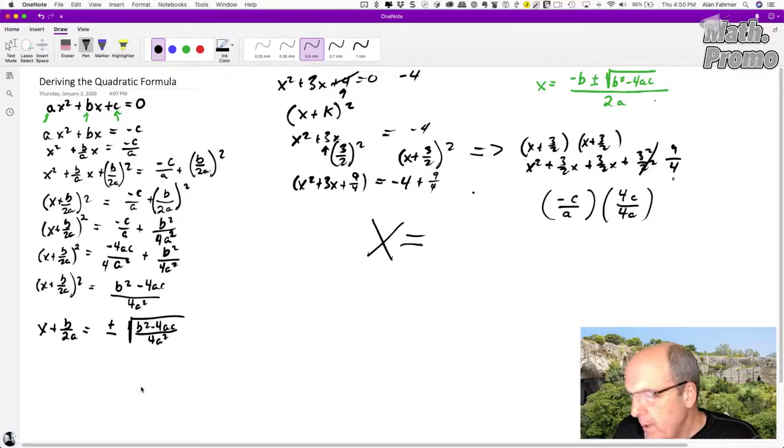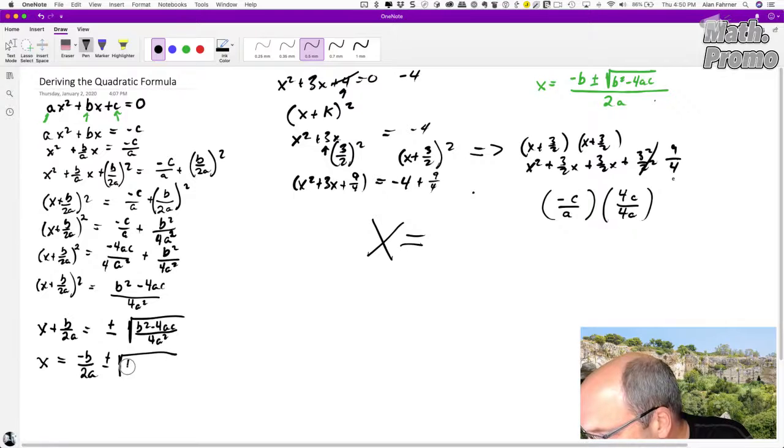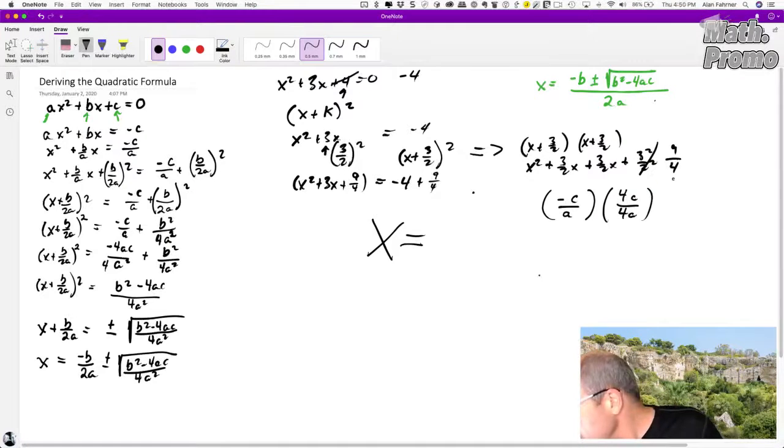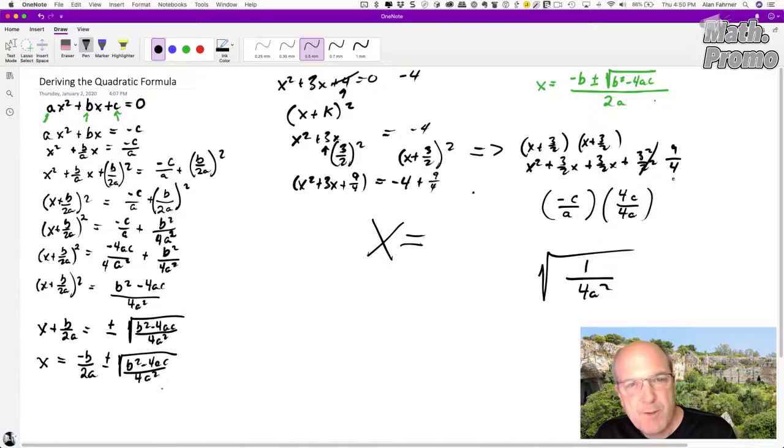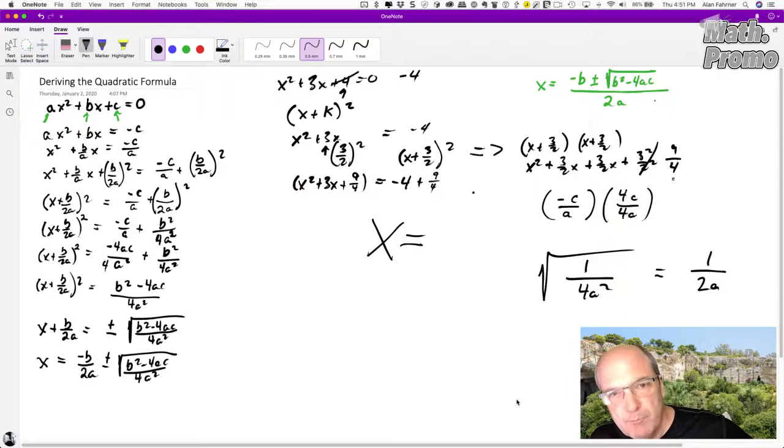We've got our X, just an X, but we have the B over 2A over there. That's not good. So let's subtract from both sides negative B over 2A. If we subtract B over 2A from this side, we get just X. If we do it from this side, we get negative B over 2A plus or minus the square root of B squared minus 4AC over 4A squared.